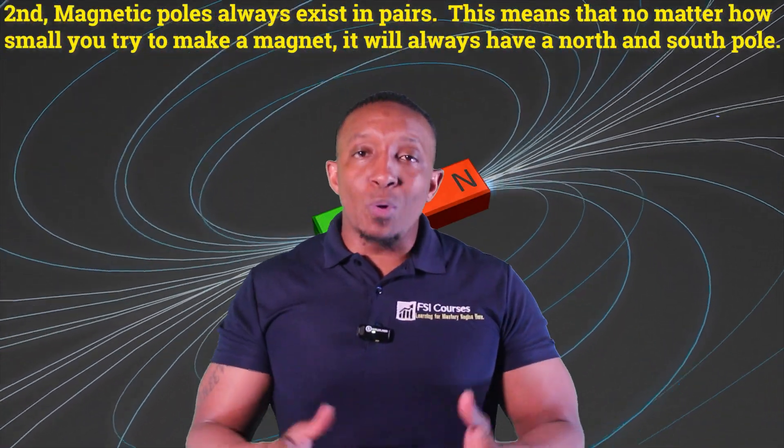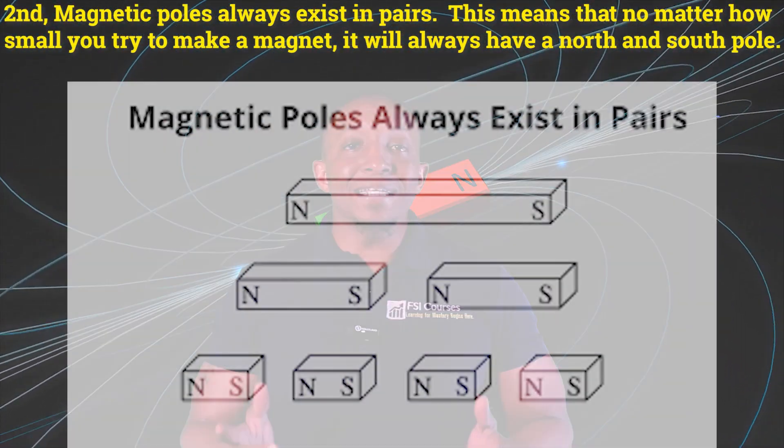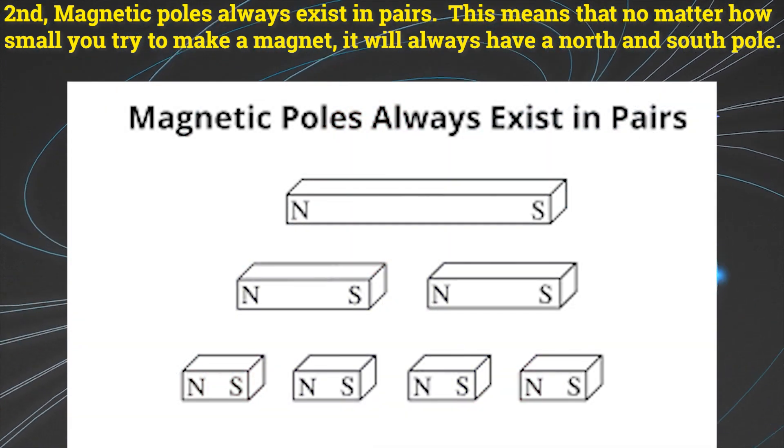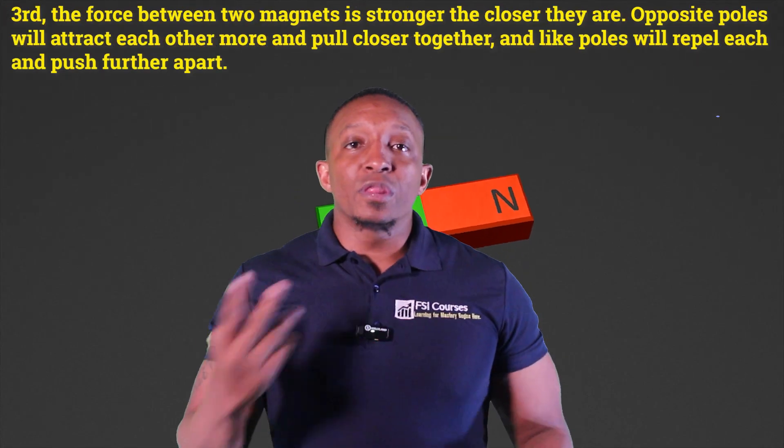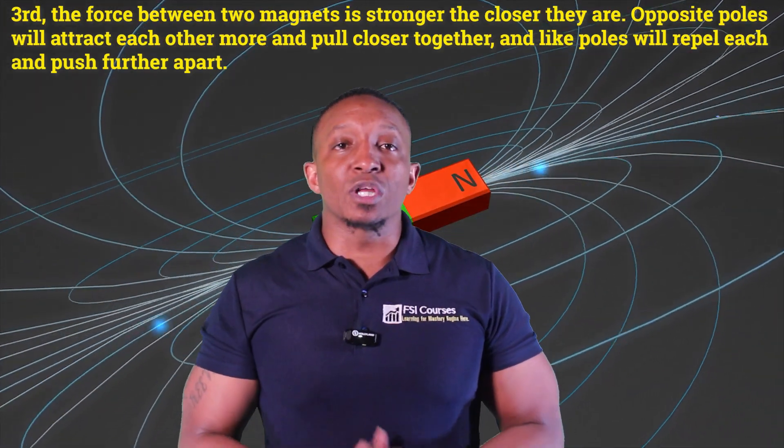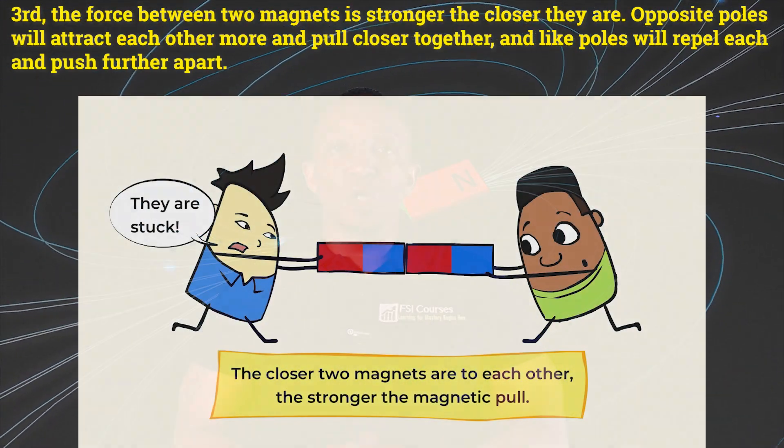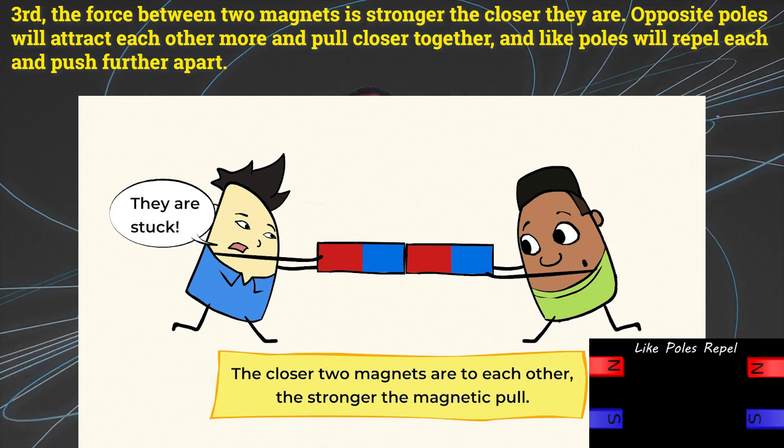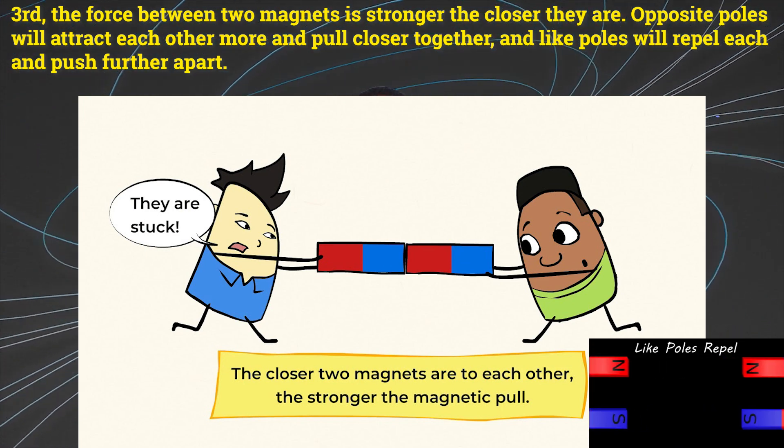Second, magnetic poles always exist in pairs. This means that no matter how small you try to make a magnet it will always have a north and south pole. Third, the force between two magnets is stronger the closer they are. Opposite poles will attract each other more and pull closer together and like poles will repel each other and push further apart.